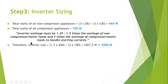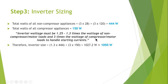Therefore, the inverter size is: 1.3 × 444 watts (non-compressor appliances) plus 3 × 150 watts (compressor/refrigerator), giving a sum of 1,027.2 watts. For ease of design, we select an inverter of approximately 1,050 watts.